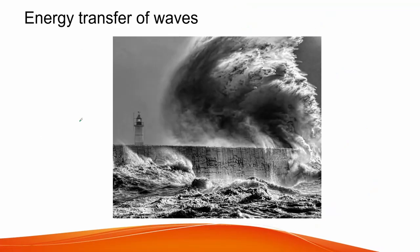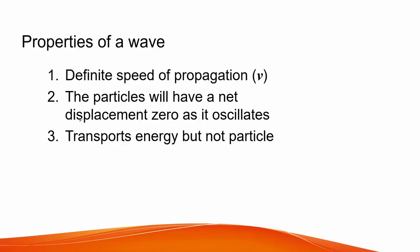We know that when waves hit a wall they exert a certain amount of force onto the wall. This force over a certain distance produces work or energy. So waves may not move particles in space but they can transfer energy. Here are the general properties of a wave: first, it has a definite speed of propagation denoted as V; second, particles will have a net displacement of zero as they oscillate from equilibrium; and third, it only transports energy, not particles.